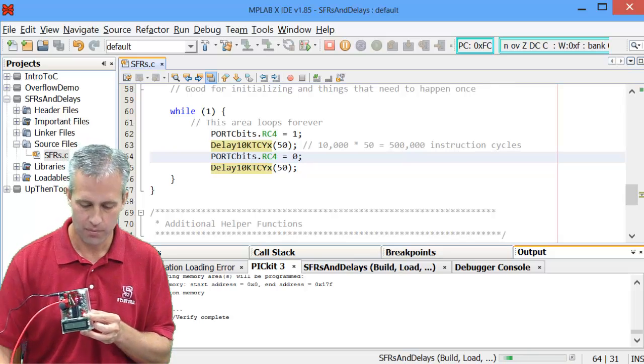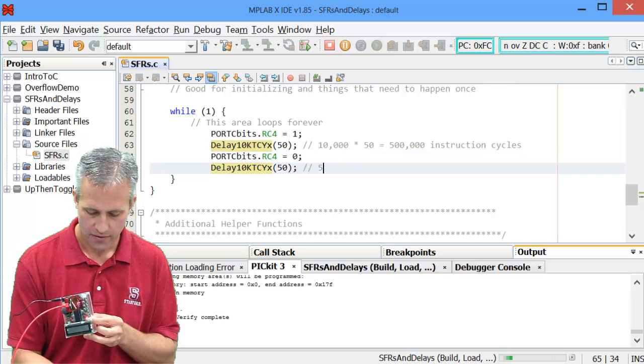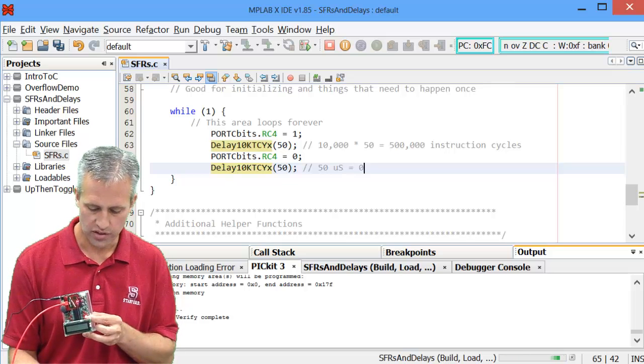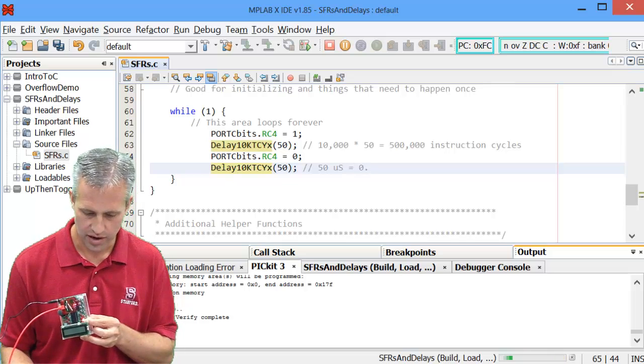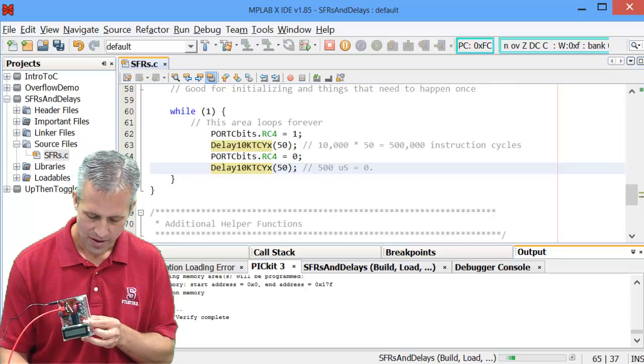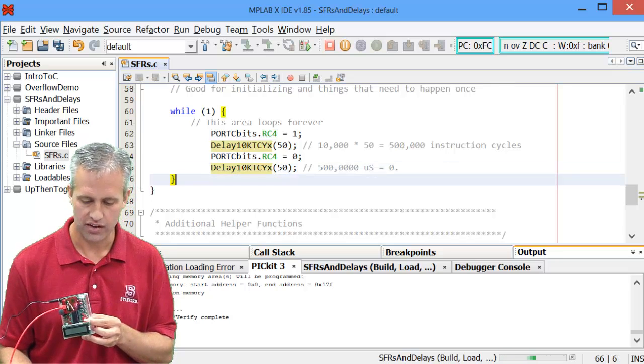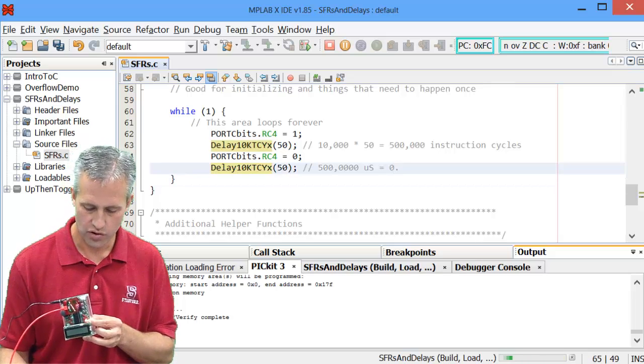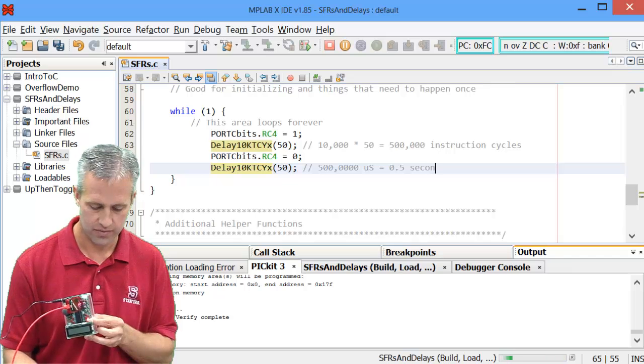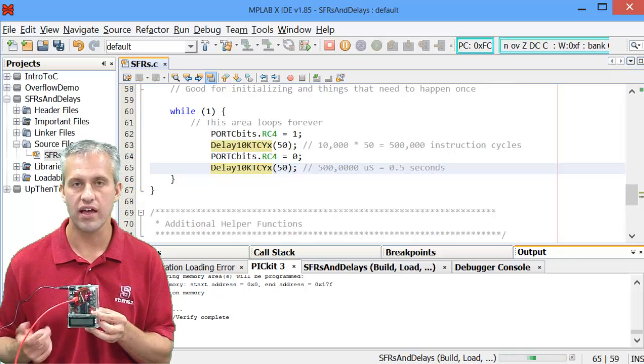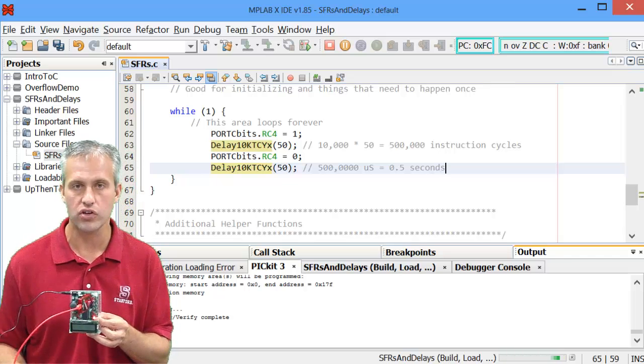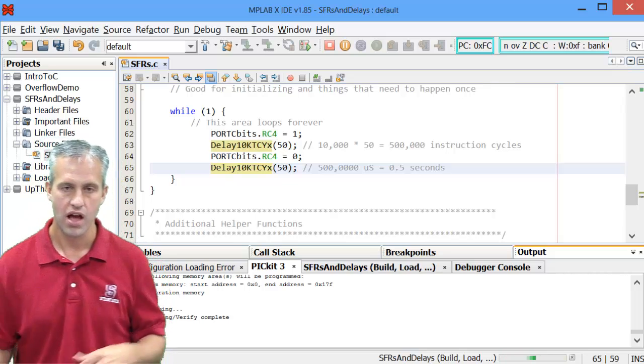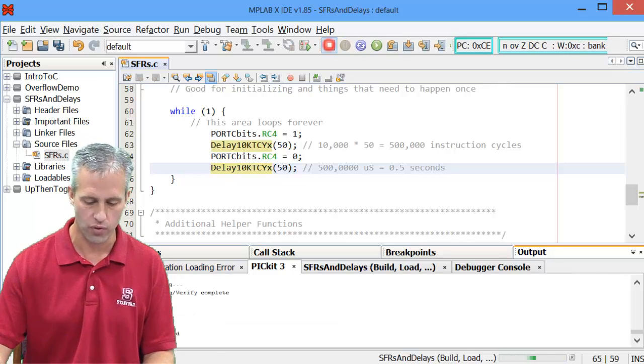So this number right here is equal to 500,000 microseconds, which is if you convert it is equal to exactly 0.5 seconds. So these are the delays. They're fairly easy to use and they help extend things for a certain length of time so that you can actually see an LED be on and off for a while.